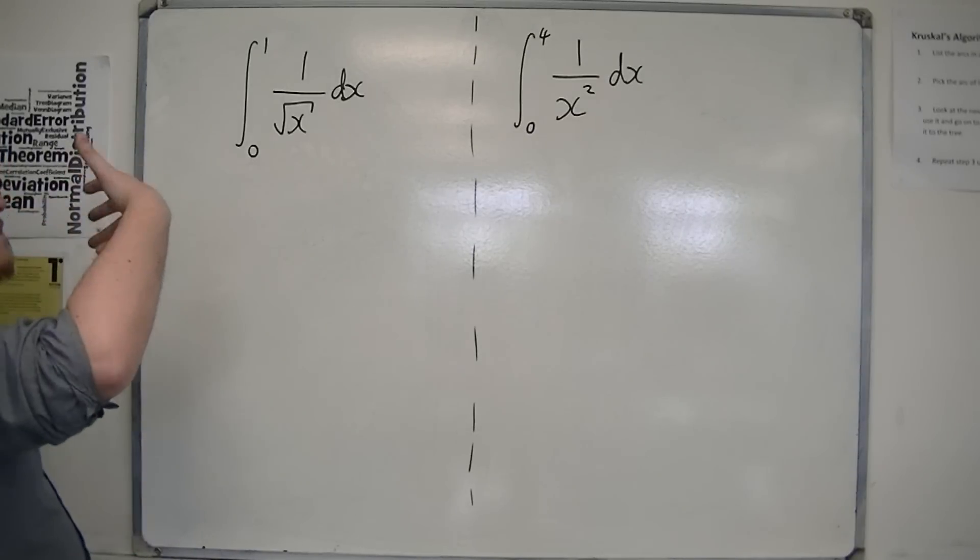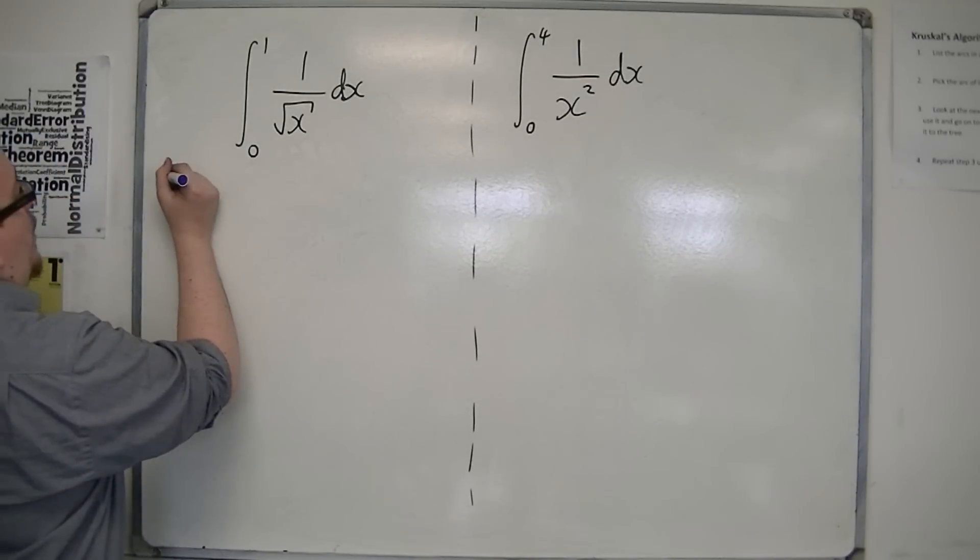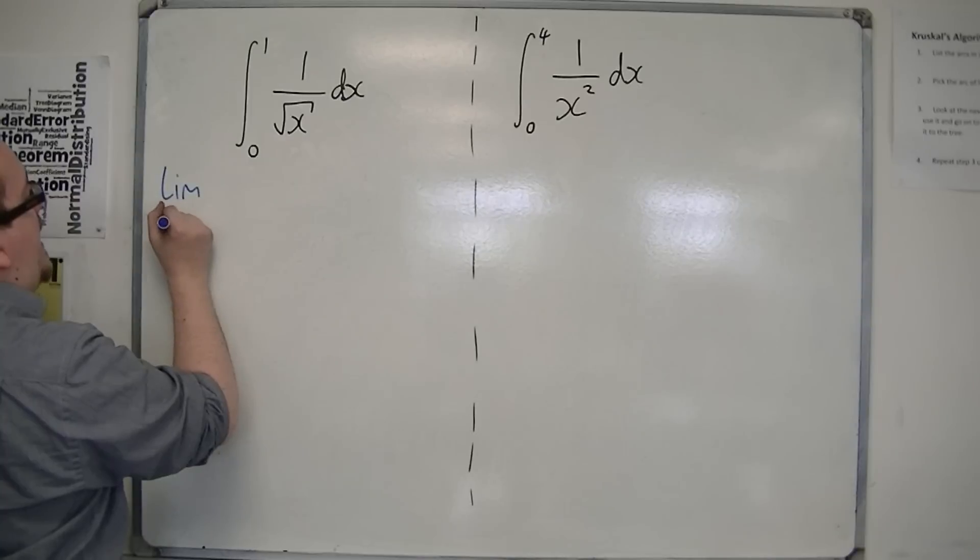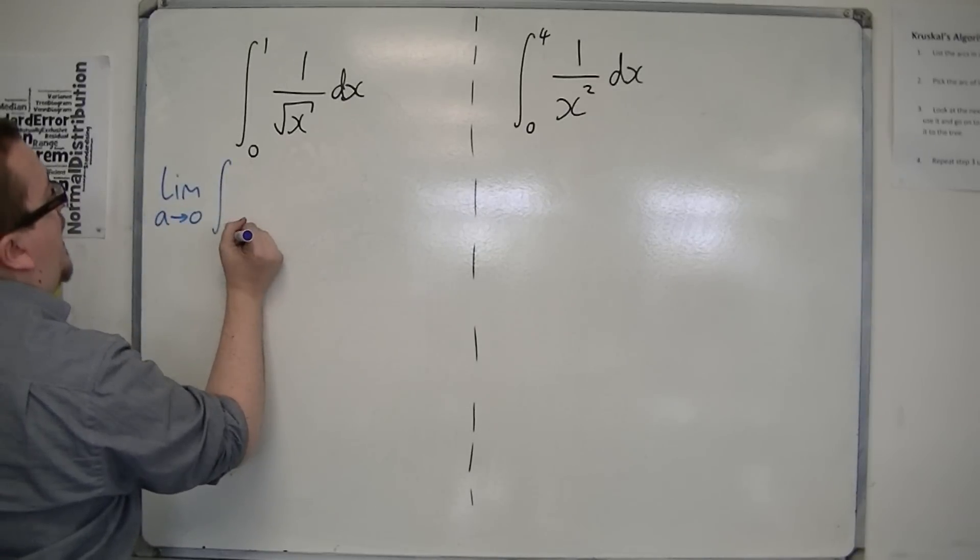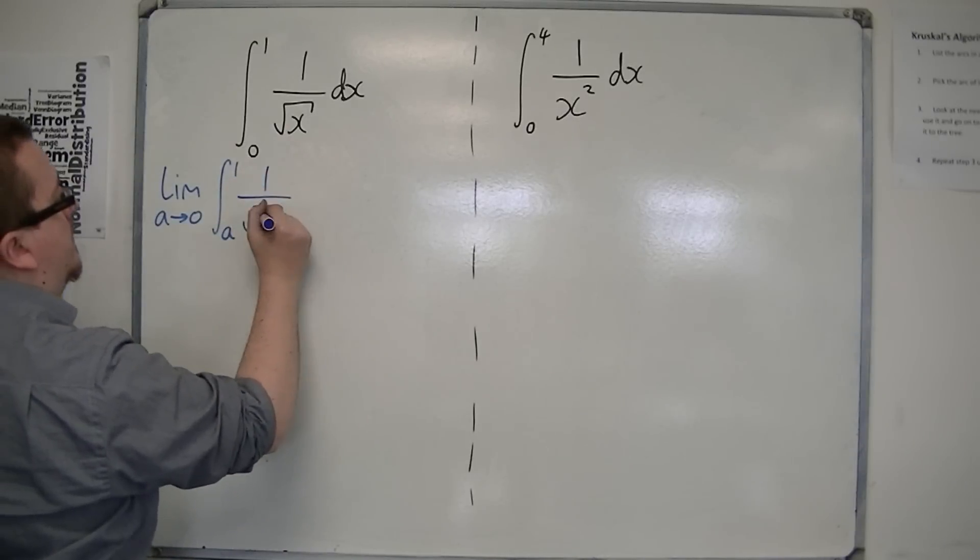Instead of replacing infinity with a letter, we're going to replace the 0 with a letter. So let's say we're looking at the limit as a tends to 0 this time of a to 1 of 1 over root x dx.